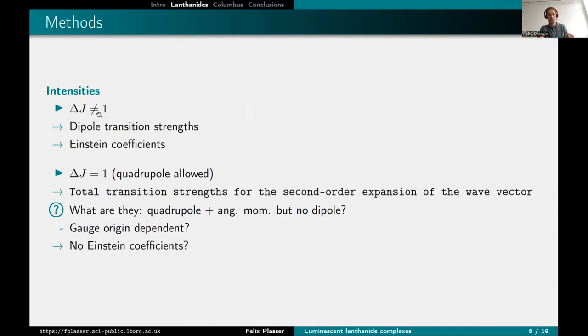For the intensities, it turns out that if delta J, so you remember we have these different 7F states, and it turns out if delta J is not equal to one, then we can just use the dipole transition strengths. And then we can compute Einstein coefficients from those. But if delta J is equal to one, then the transition is quadrupole allowed but dipole forbidden. I use this thing called transition strengths for the second order expansion. Roland already answered some of those questions yesterday, but then of course, the question is the results depend on the gauge origin. So you have to specify an origin for quadrupole moment and angular momentum integrals. We got some reasonable results there, but OpenMolcas doesn't compute Einstein coefficients for these. So I'm not quite sure if you can just do those manually. Those are some technical things.